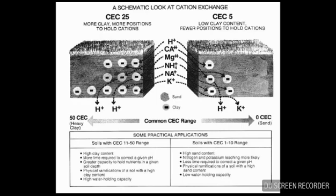The physical ramification of a soil with high clay content is high water holding capacity. For soils with a cation exchange capacity in the 1 to 10 range, there is high sand content, and nitrogen and potassium leaching is more likely. Less lime is required to correct a given pH, and the physical ramification of a soil with high sand content is low water holding capacity.